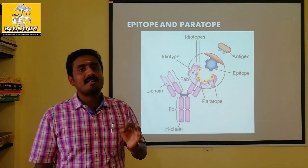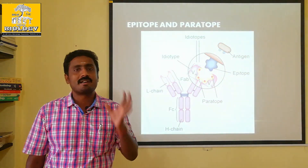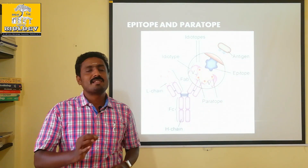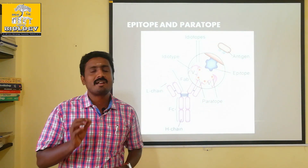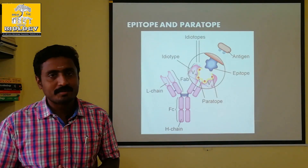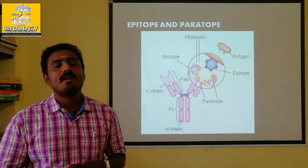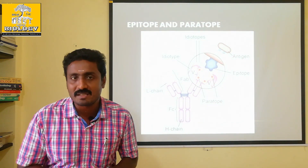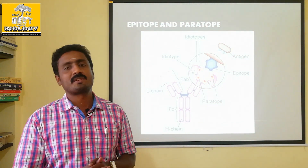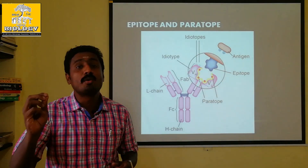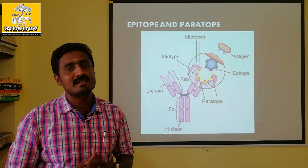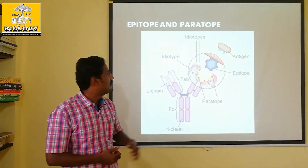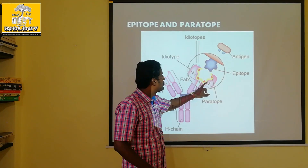What cells produce antibodies against a specific antigen? The antibodies are produced by specific immune cells. We will identify which cells produce the antibodies from the paratope-epitope interaction.